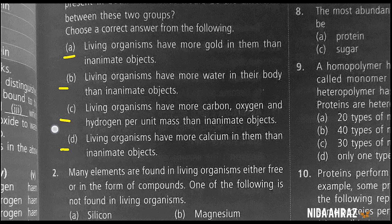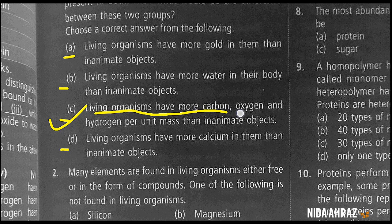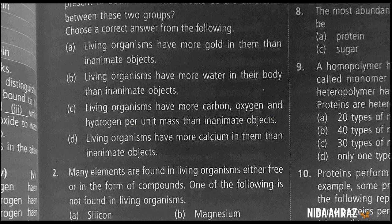The correct choice is C. Living organisms have more carbon, oxygen, and hydrogen per unit mass than inanimate objects.